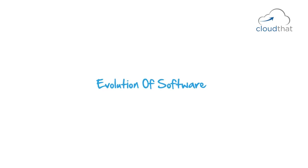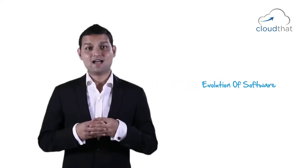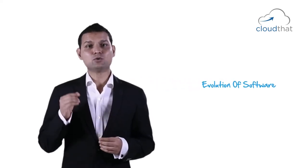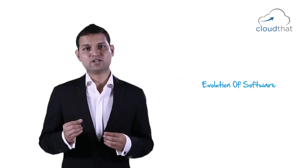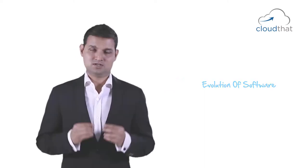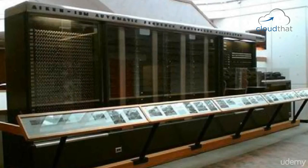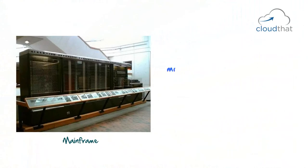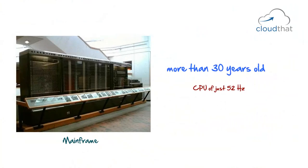In this video on the evolution of software, we are going to take a look at how and what drove cloud computing to become such a buzzword. Can you take a guess what is in this picture? This is a picture of a mainframe — the machine is more than 30 years old, with a CPU of just 52 Hz and only 1.7 KB of RAM.